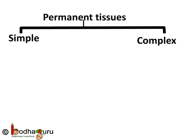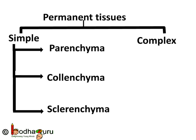The permanent tissues in plants are of two types: simple permanent tissues and complex permanent tissues. Simple permanent tissues are made of one type of cells which look like each other. Complex permanent tissues are made of more than one type of cells; these cells coordinate with each other to perform a common function, and we shall learn about them in later classes. The three types of simple permanent tissues are parenchyma, collenchyma, and sclerenchyma.